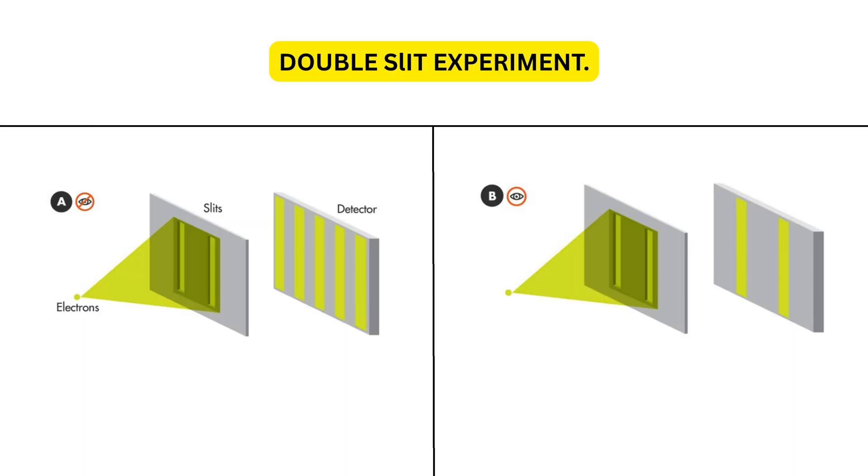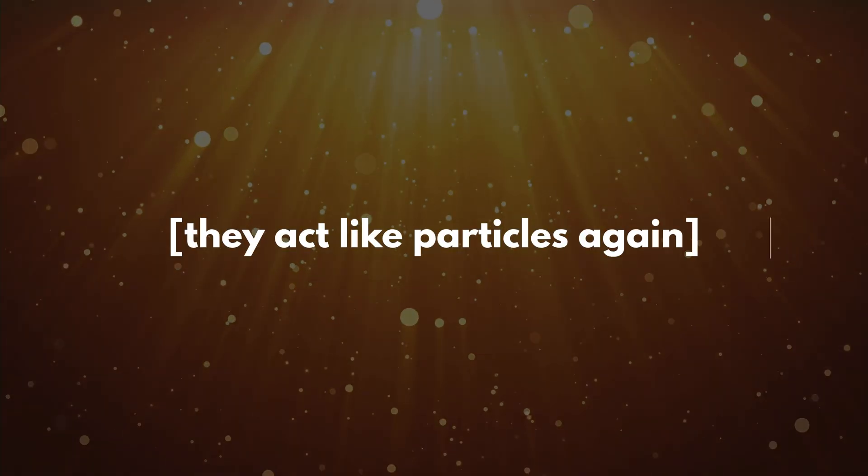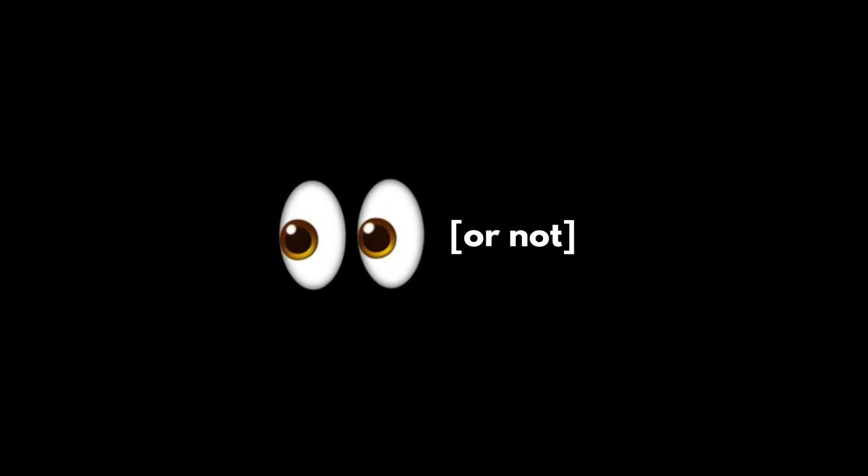In the famous double-slit experiment, electrons fired at a barrier with two slits create a wavy interference pattern, like water. But when we try to observe which slit they go through, the wave vanishes. They act like particles again. It's as if reality chooses a form based on whether we're watching or not.